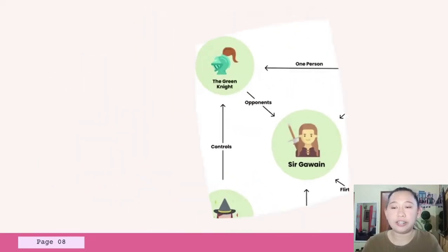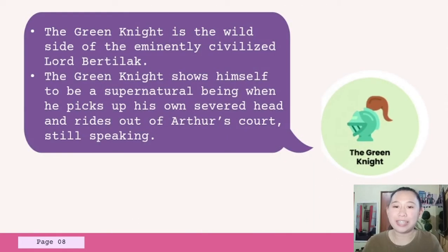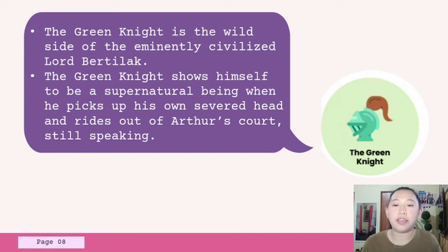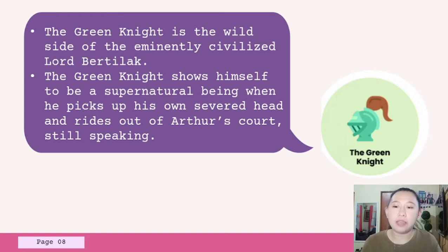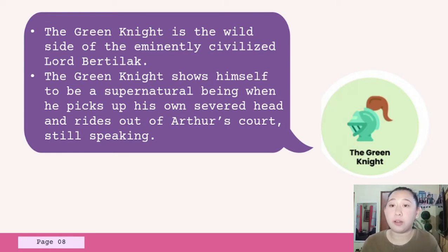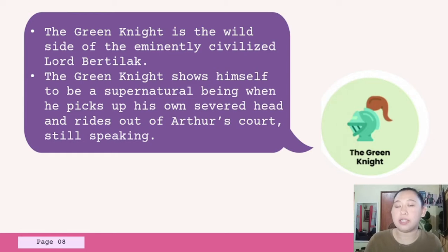Our next character is the Green Knight. He is the wild side of the eminently civilized Lord Bertilak. The Green Knight shows himself to be a supernatural being when he picks up his own severed head and rides out of Arthur's court, still speaking. He seems to symbolize the natural world in that he is killed and reborn as part of a cycle. At the poem's end, we discover that the Green Knight is also Bertilak, Gawain's host, and one of Morgan le Fay's minions.